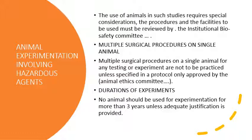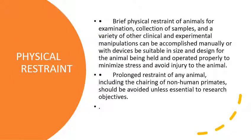Multiple surgical procedures on a single animal should be limited unless justified and approved by the animal ethics committee. The duration of an experiment should not be prolonged beyond three years unless justified. Regarding physical restraint, sometimes we need to restrain the animal to collect samples or perform experimentation. Animals should be allowed to adapt to restraint, and it should not cause much distress. Prolonged restraint, including chairing of non-human primates, should be avoided unless essential to research objectives.